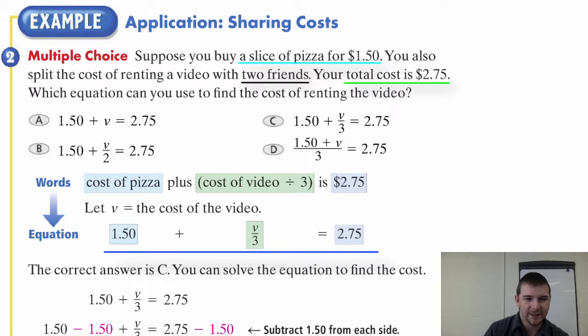So the correct answer is C. Notice that's $1.50 plus v divided by 3 equals $2.75. Now, you can solve the equation to actually find the cost. So let's do that.